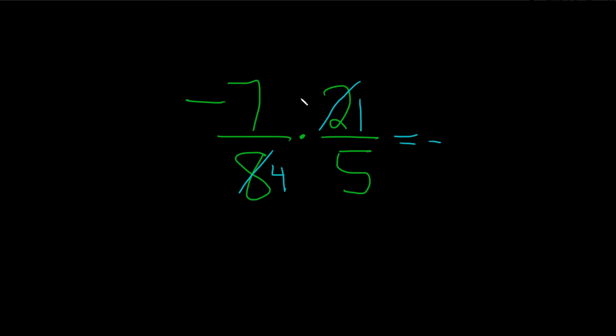Then you just multiply straight across. 7 times 1 is 7, 4 times 5 is 20.